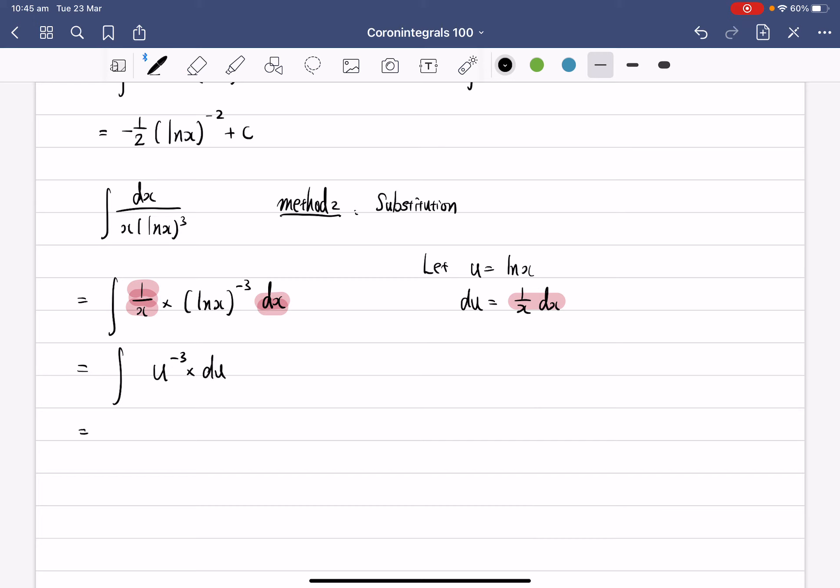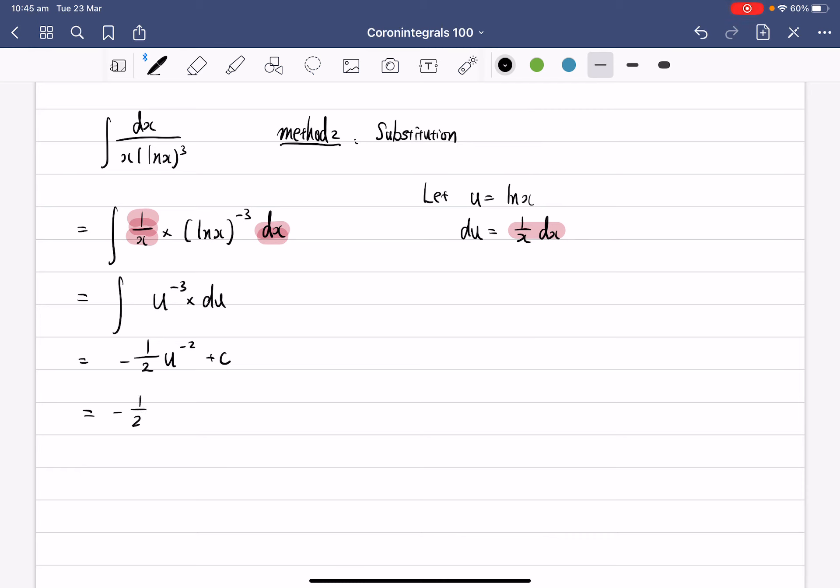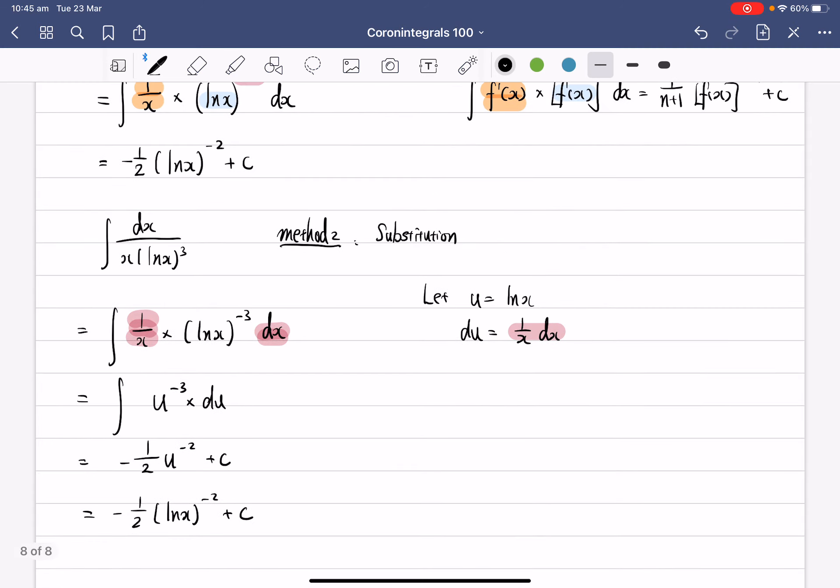So now we can integrate this one, that becomes negative 1 over 2, u to the power of minus 2 plus c. So now eventually you substitute the lnx back into the u, so you get negative half lnx to the power of minus 2 plus c,